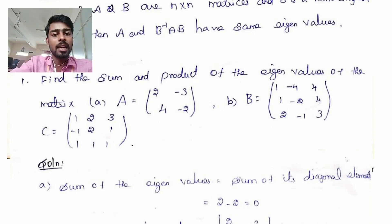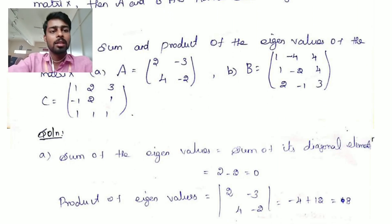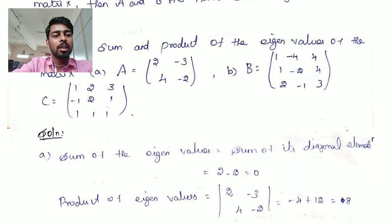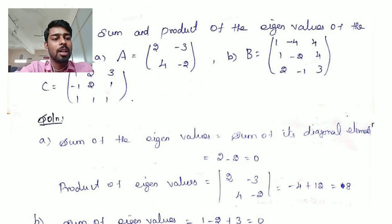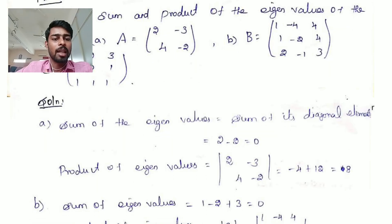In first matrix A, solution of A is, sum of the eigenvalues is 2 minus 2, because of 2 plus of minus 2 equal to 0. So your sum is 0. Product means determinant of A. You can find the determinant matrix means, you can get 2 into minus 2 minus 4 plus minus of minus plus 12 equal to 8.